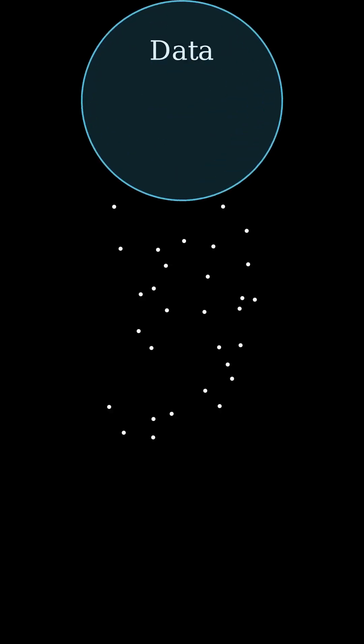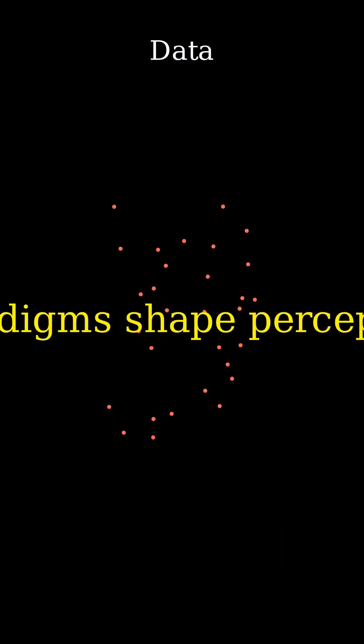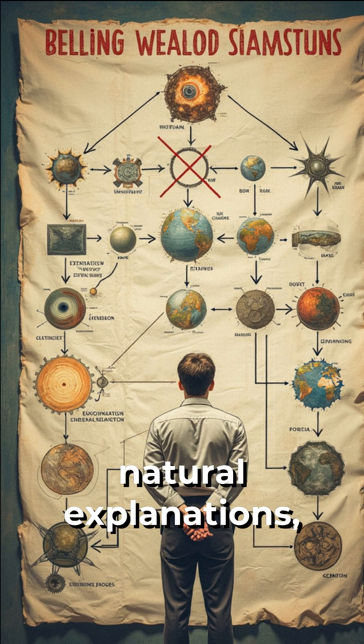In The Structure of Scientific Revolutions, philosopher of science Thomas Kuhn stressed that paradigms, frameworks for scientific concepts, shape how scientists perceive data. Atheistic groups frequently embrace natural explanations.